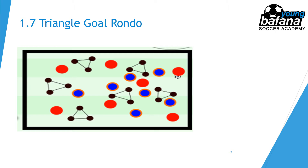We have one red team of seven players playing against the blue team of seven players. It's possible to do this game with neutral players if the team in possession struggles, or to play seven-v-seven or eight-v-eight. The more players you have, the more complex it becomes, but the base form is a seven-v-seven or eight-v-eight.